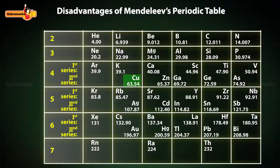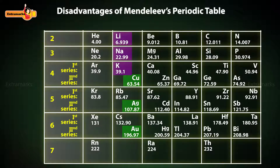For example, the inactive coinage metals — copper, silver, and gold — were placed in group 1B, along with the most active metals like lithium, sodium, potassium, etc., of group 1A.